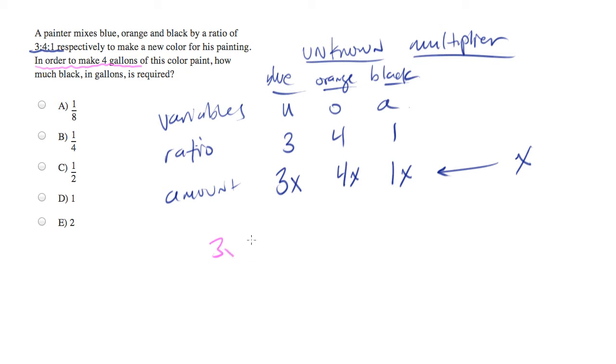So we have 3x blue - actually let me go back a step. So we have the amount of blue, plus the amount of orange, plus the amount of black. And for this we can plug in the amount, the variables we calculated in the amount rows.